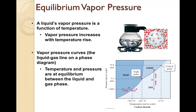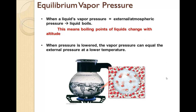The liquid's vapor pressure is a function of temperature. As the temperature increases, the vapor pressure increases. Looking at the liquid-to-gas line on the phase diagram, the vapor pressure curve represents where temperature and pressure are at equilibrium between the liquid and gas phase. When a liquid's vapor pressure is equal to the external atmospheric pressure, the liquid boils. This means boiling points of liquids change with altitude — when pressure is lowered, the vapor pressure can equal the external pressure at a lower temperature, so at lower pressures or higher altitudes, it can boil with less energy.